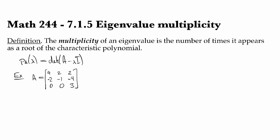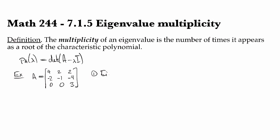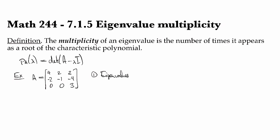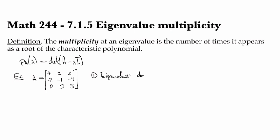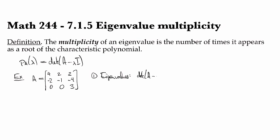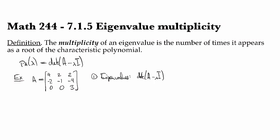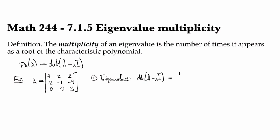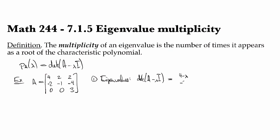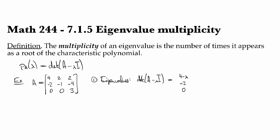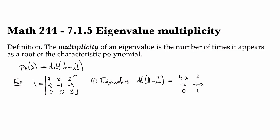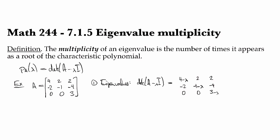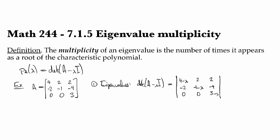Step one is to look for the eigenvalues. For that one, we look at the determinant of A minus lambda I. That's our characteristic polynomial. So I'm going to be subtracting lambda off the diagonal. So I have 4 minus lambda, -2, 0, then 2, -1 minus lambda, 0, and then 2, -4, 3 minus lambda as the determinant that I need to compute.